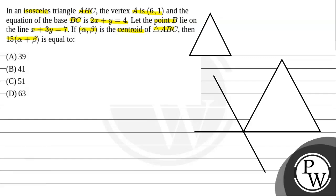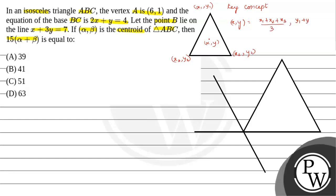Now let us write the key concept for this question. If we have a triangle with coordinates x1, y1 and x2, y2 and x3, y3, and we take the centroid with coordinates (x, y), then the centroid is found by x = (x1 + x2 + x3) / 3 and y = (y1 + y2 + y3) / 3.